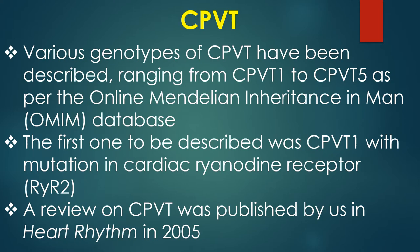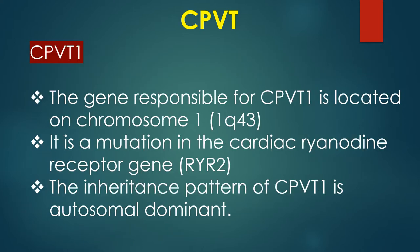The first genotype described was CPVT1, with mutation in the cardiac ryanodine receptor. A review on CPVT was published in HeartRhythm in 2005. The gene responsible for CPVT1 is located on chromosome 1, and it is a mutation in the cardiac ryanodine receptor gene. The inheritance pattern of CPVT1 is autosomal dominant.